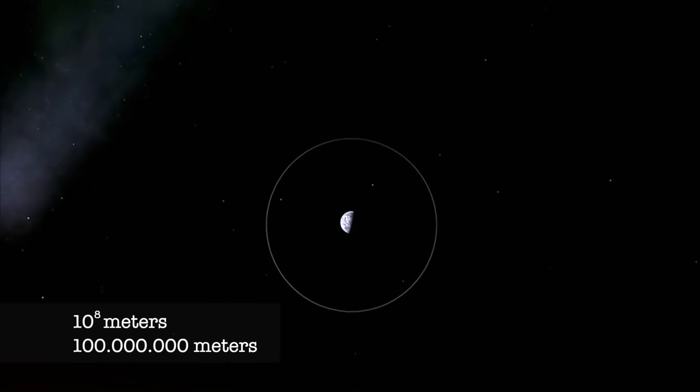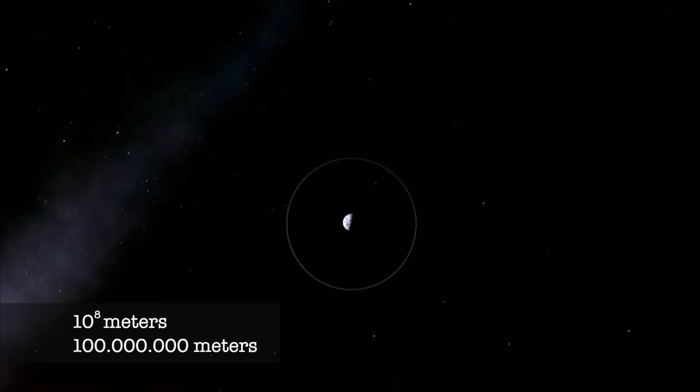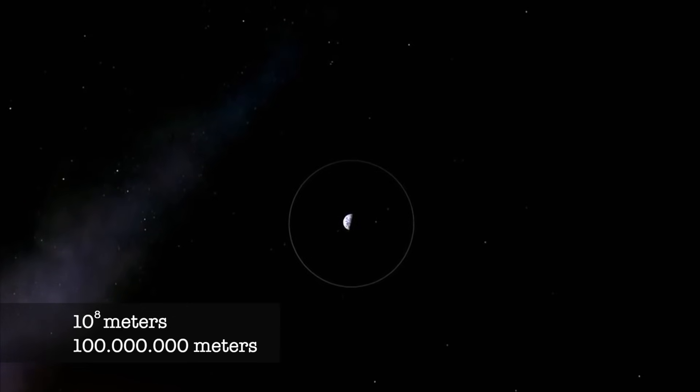Eight steps on our outward journey, eight powers of ten, and we pass the farthest reaches of human travel, the moon.